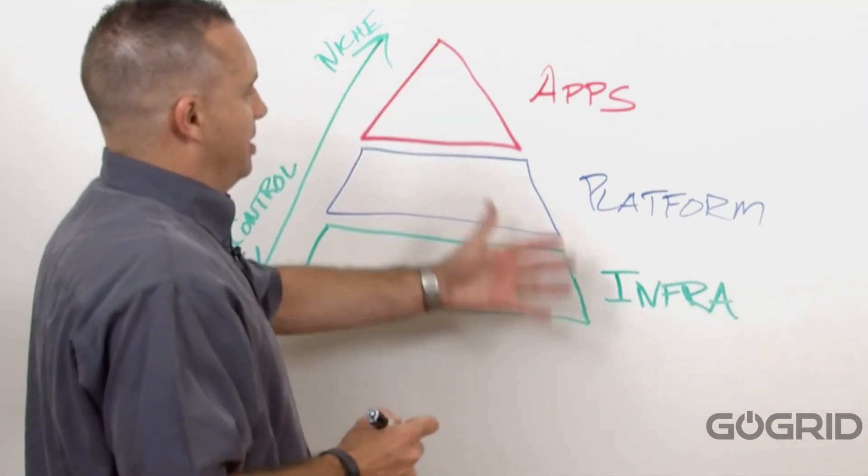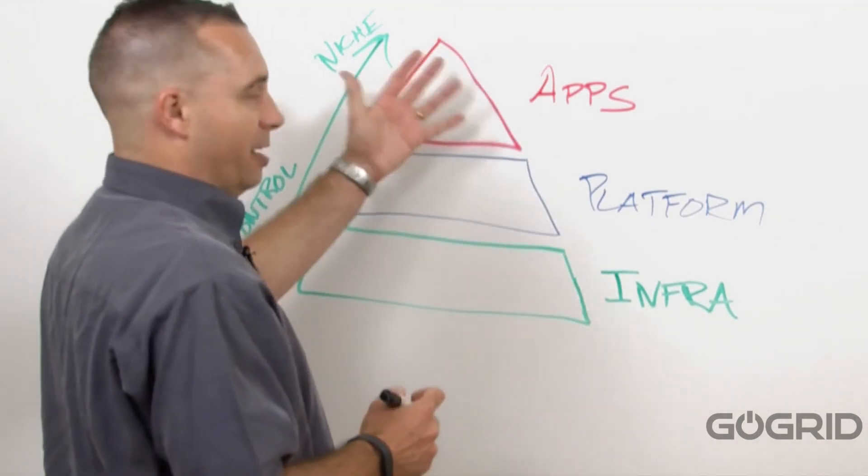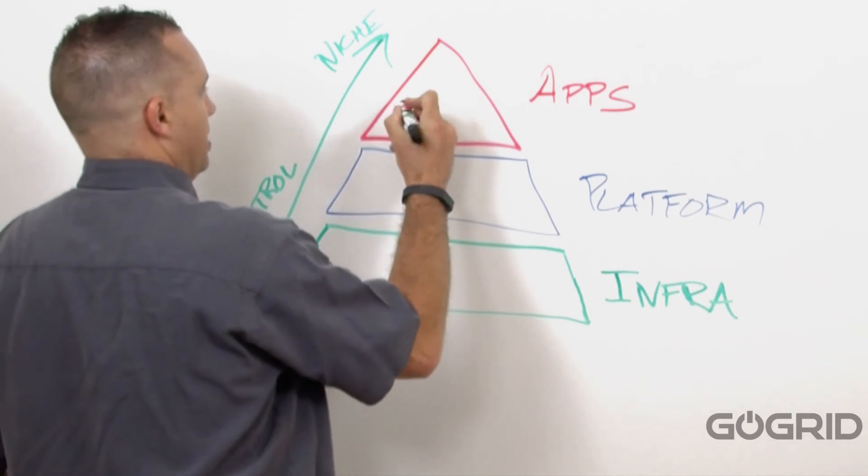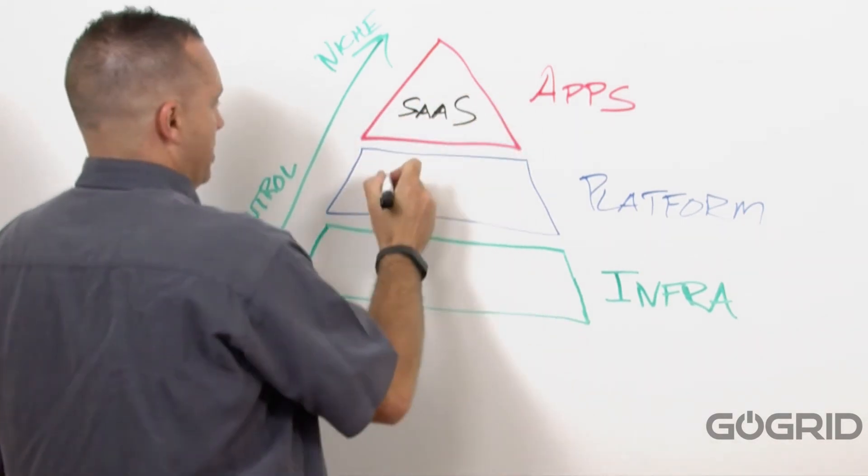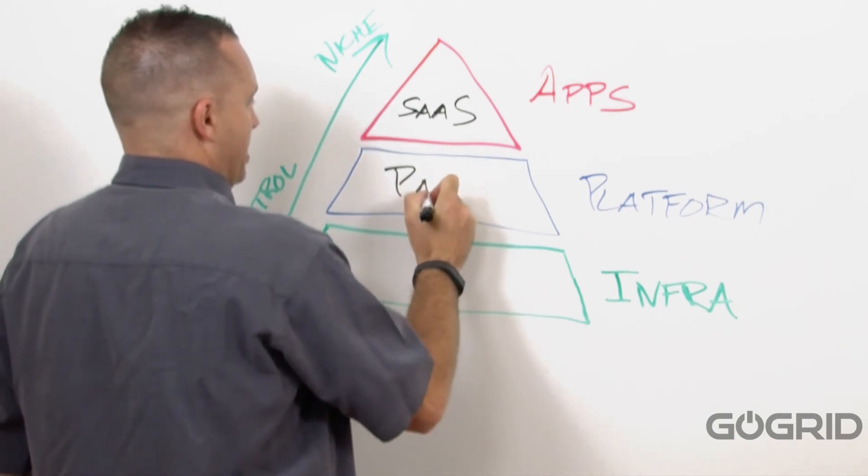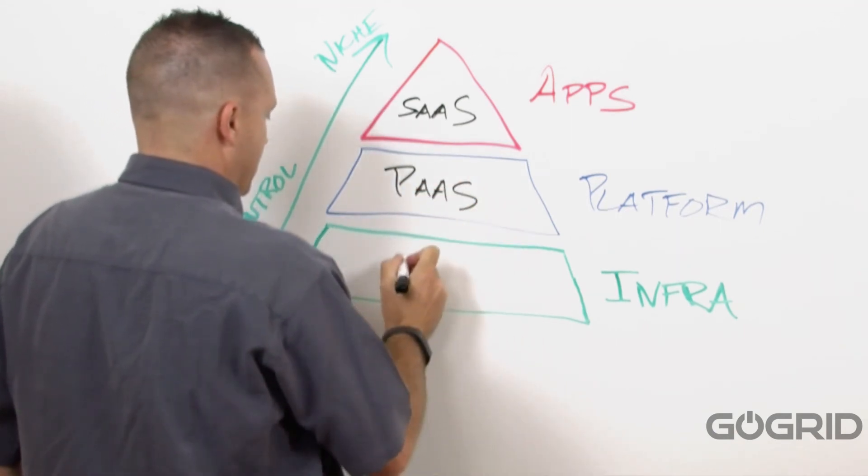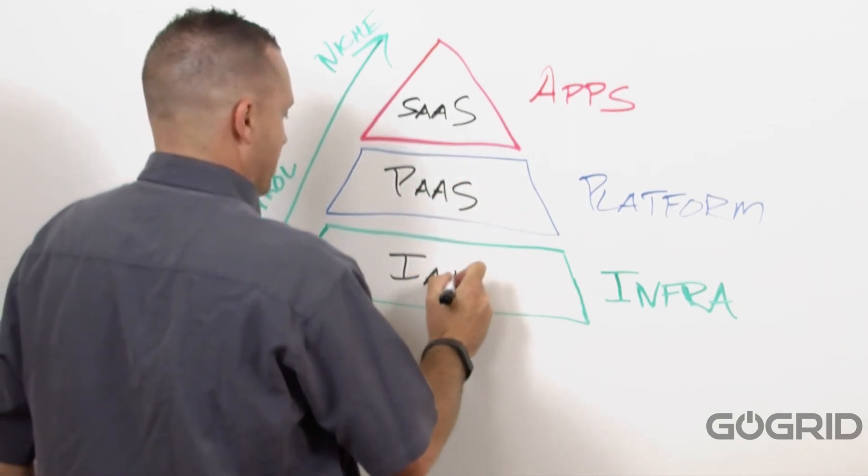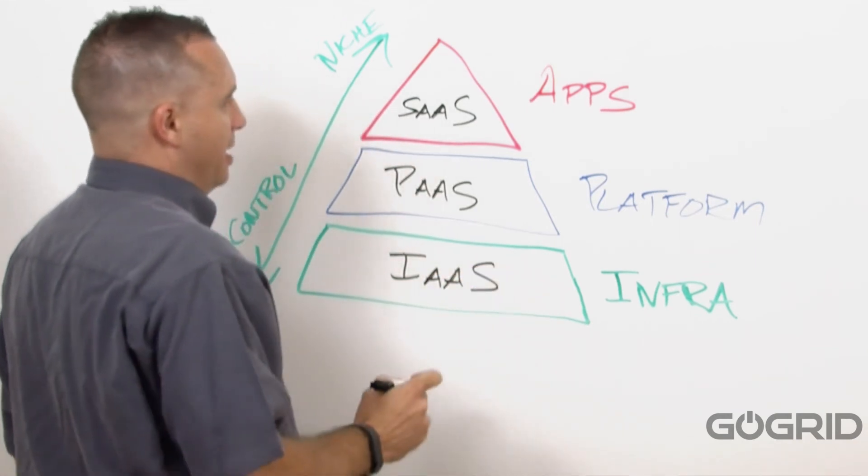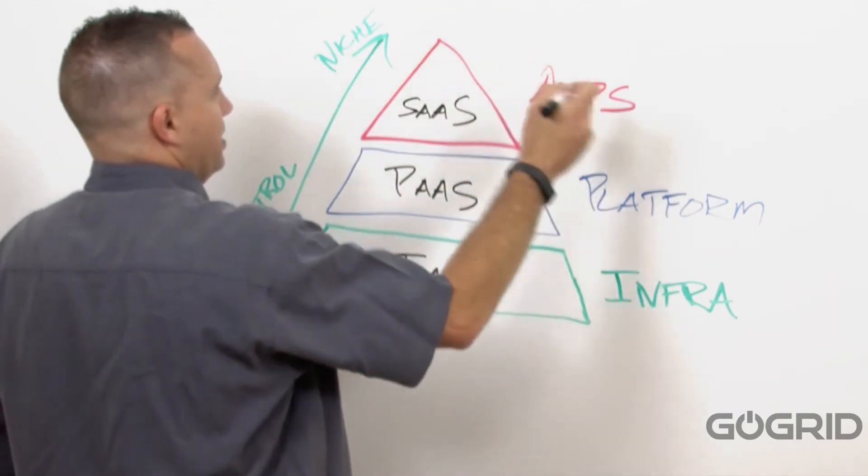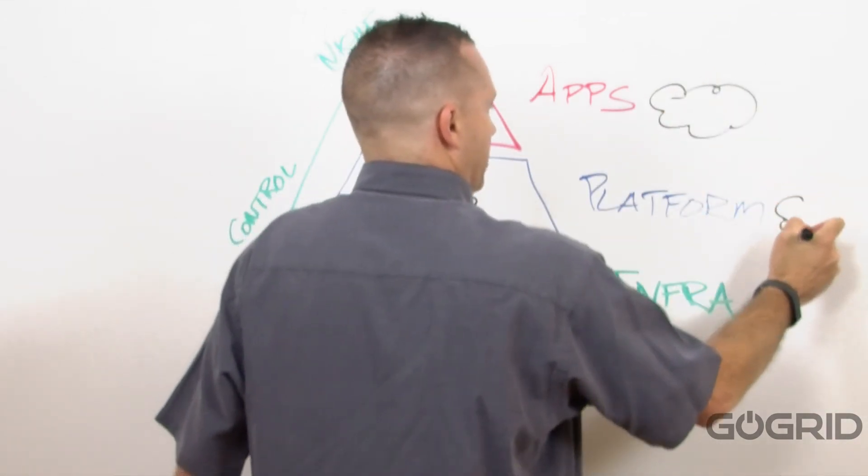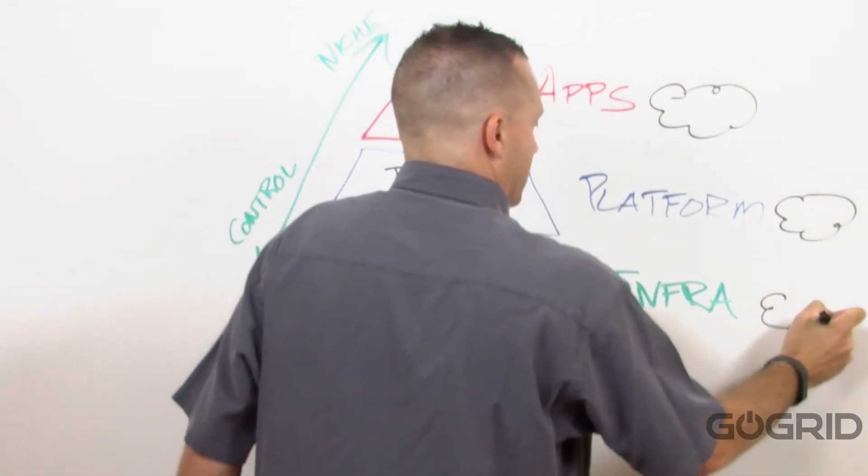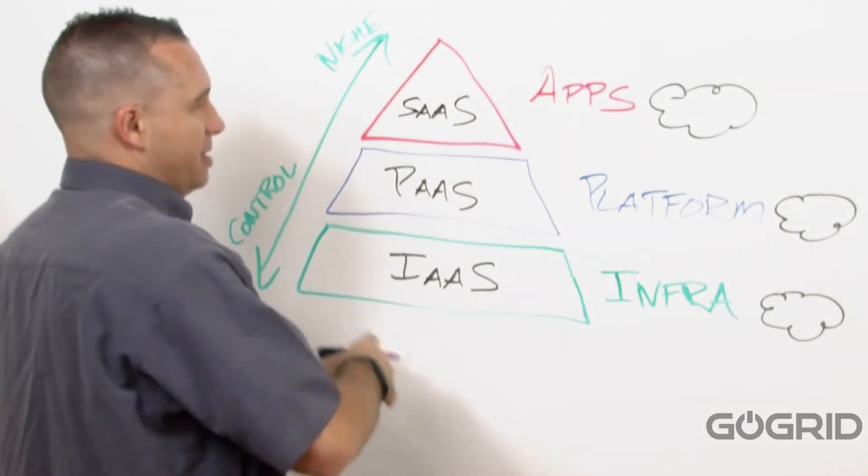Other ways that these layers of the cloud pyramid are called: This is software as a service. This is platform as a service. And then, this is infrastructure as a service. All of this stuff, these are all clouds. Each layer here is a type of cloud.